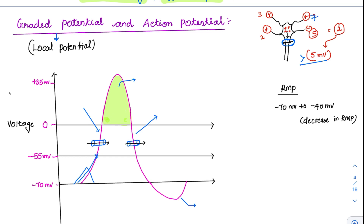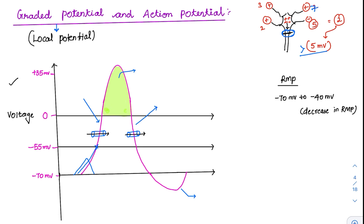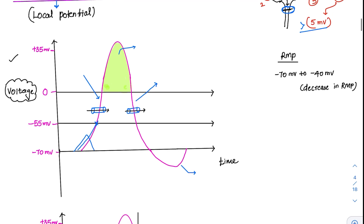This is the classical waveform of an action potential. Along the x-axis is time, and along the y-axis is voltage. This is always important in any graph we try to understand. Starting from minus 70 mV — that is our resting membrane potential (RMP). This minus 70 mV is the RMP of our neuron, and we begin our analysis from here.